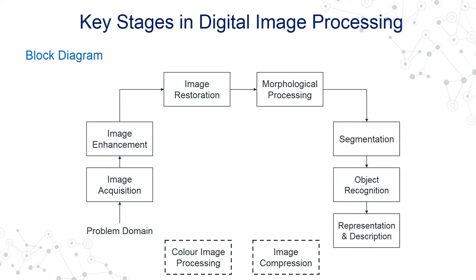For image compression, to reduce the requirement of large amounts of memory needed to store an image on a disk or the bandwidth to transmit it, we compress the image such that information is not lost but we are able to communicate and access data at a faster rate and store it at a lower memory requirement. Colour image processing involves transforming the image into different colour models or doing pseudo colour processing to extract or enhance certain tones.